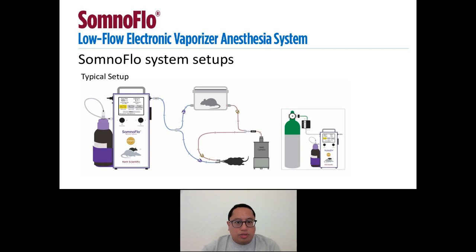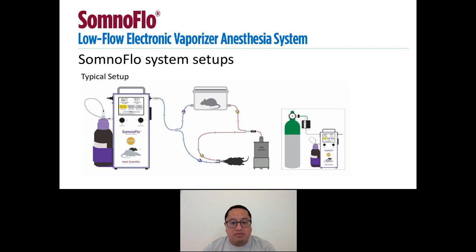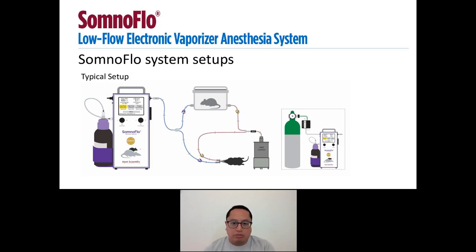Now we'll go through various SomnoFlow system setups. This diagram displays a typical setup with an induction chamber and a face mask using the two accessory adapter. The anesthesia outlet marked in blue is the inspiratory line, which comes from the SomnoFlow and splits into two branches leading to either the induction chamber or the face mask. Leading out from the induction chamber and the mask is the expiratory line marked in red. This line passively carries waste gases to the WAG canister. If you choose to connect your SomnoFlow to compressed gas, the incoming pressure from the compressed gas tank must not be higher than 15 psi.